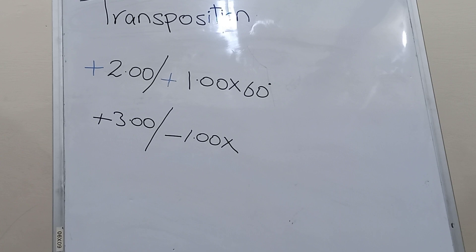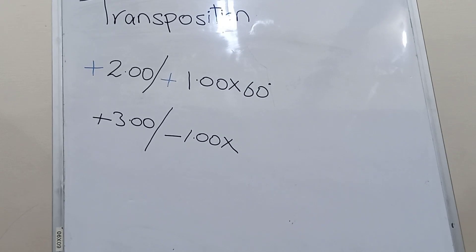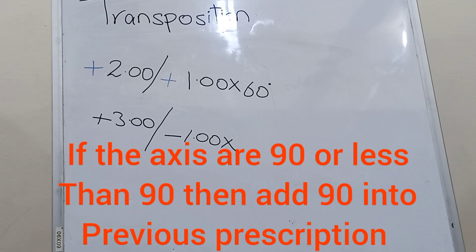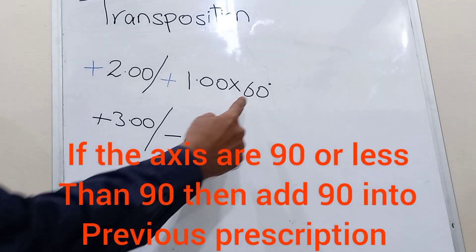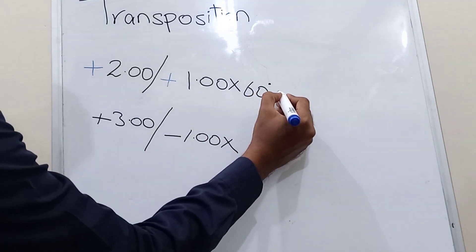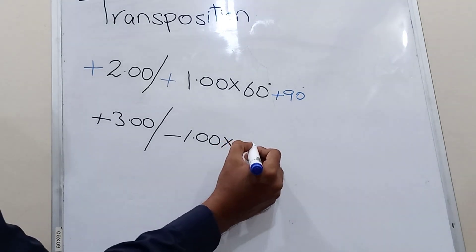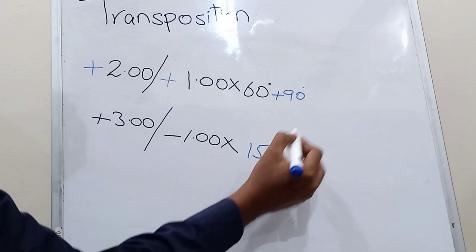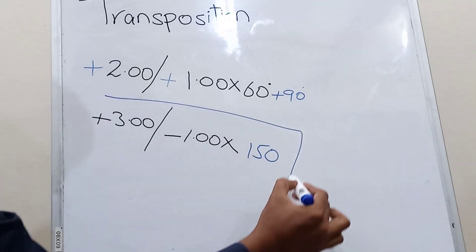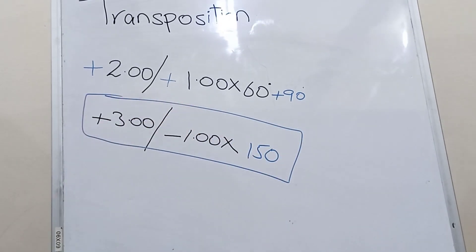The third step is to rotate the axis 90 degrees apart. The axis of the cylinder is 60, which is less than 90 degrees. As you remember, if the axis is 90 or less than 90, we add 90 to the previous axis. Our previous axis is 60, so adding 90 gives a new axis of 150. This is the new toric prescription after transposition.